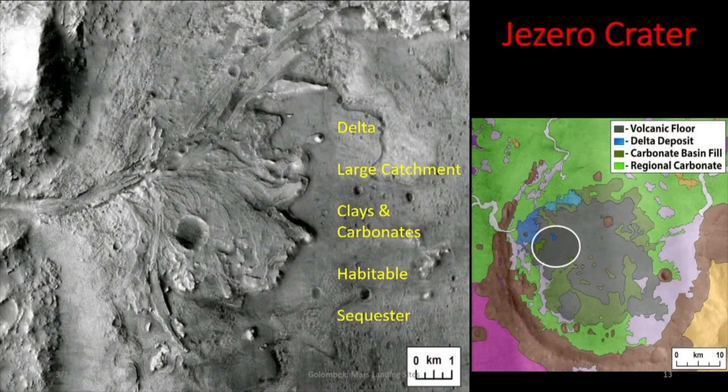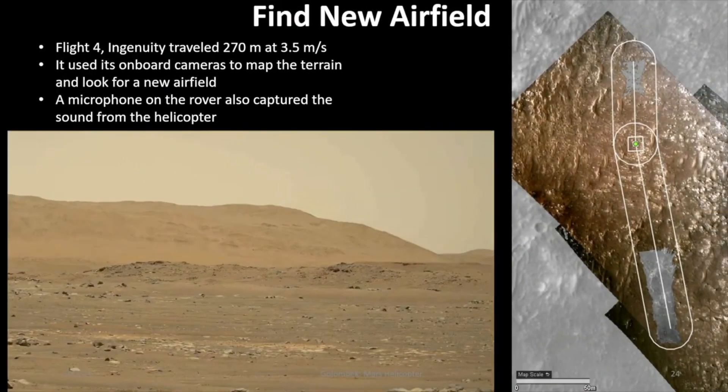We're looking for bugs—an ancient habitable environment at about the same time that liquid water was stable here on Earth and life formed. The place selected is called Jezero Crater. Here is the flight coming back from that epic Flight 133, coming all the way back to the same place we started, and then it is landing.